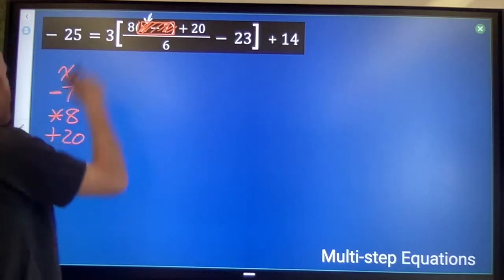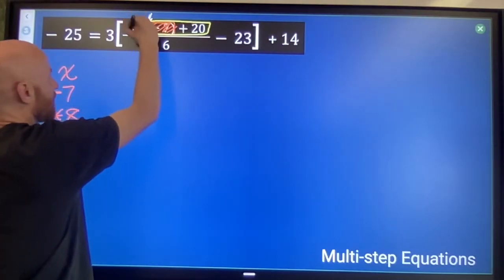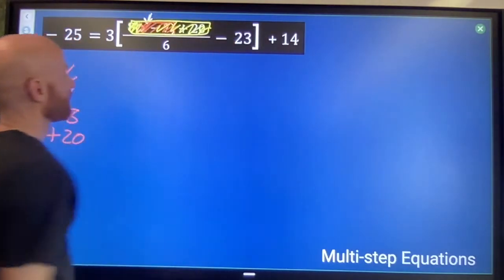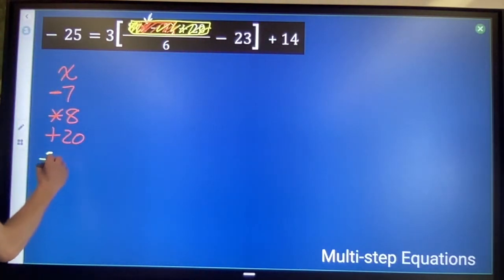Now, what happens to my block here? I'm dividing by 6 and then subtracting 23. Divide by 6 and then subtract 23.